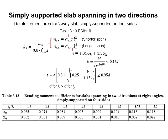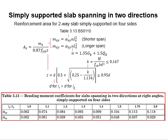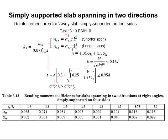This slide shows the design of the reinforcement area for a two-way slab which is simply supported on all four sides. First, you need to obtain a factor of coefficients from Table 3.13, BS8110, which is this table. Alpha sx is meant for the shorter span and alpha sy is meant for the longer span.